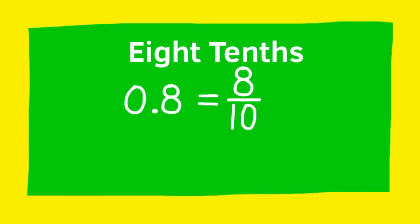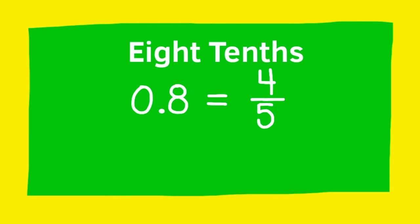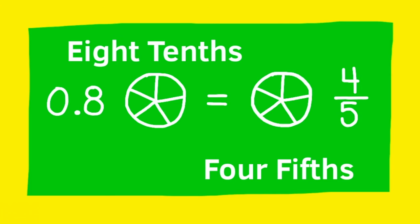8 tenths as a fraction can be simplified or reduced to 4 fifths, because the greatest common factor of 8 and 10 is 2. 8 divided by 2 is 4, and 10 divided by 2 is 5, so 8 tenths is equivalent to 4 fifths. Let me show you what they look like side by side.